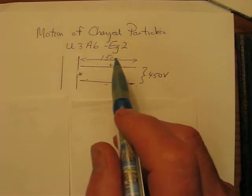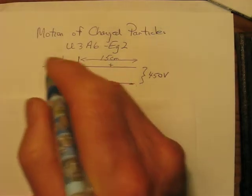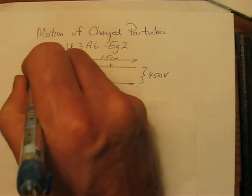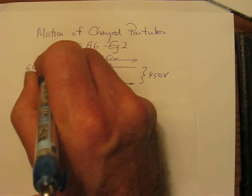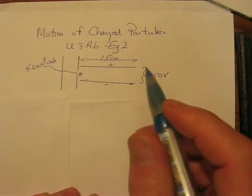There is some additional information given that the particle happens to have the speed of 5.0 times 10 to the 8 centimeters per second as it enters here. How did that happen?